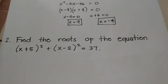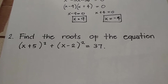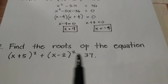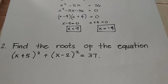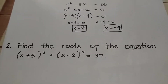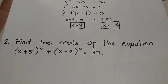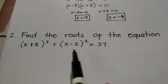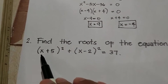Let's now proceed with the second example. Find the roots of the equation: the quantity (x plus 5) squared plus the quantity (x minus 2) squared is equal to 37. Is the equation already in standard form? Well, of course it's not. So to transform it into standard form, let us first simplify the binomials.